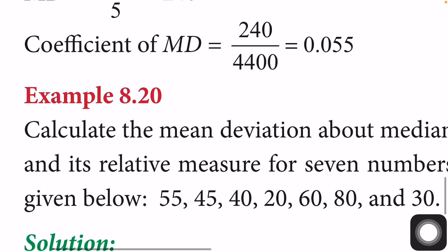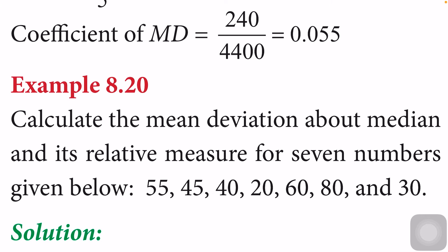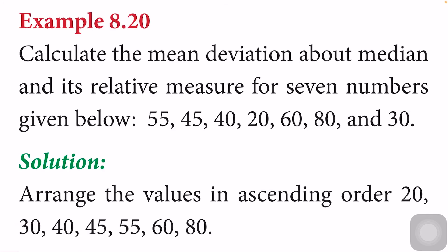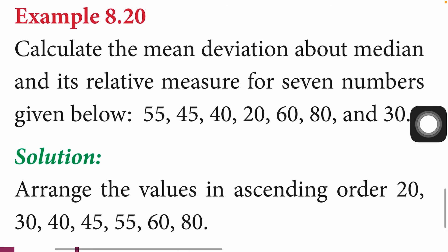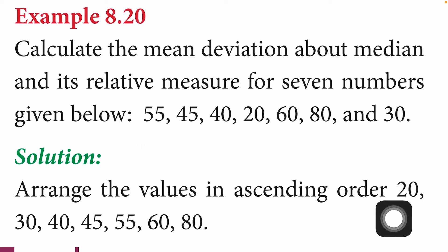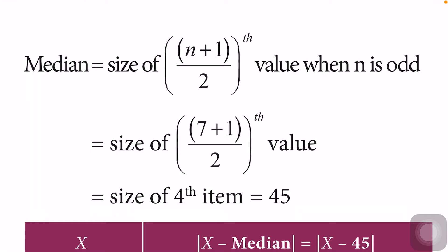Next example: calculate the mean deviation about median and its relative measure for 7 numbers given below. First we calculate the median. To do so, we arrange the values in ascending order. With n equal to 7 (odd), the median is the size of the (n+1)/2 value, i.e., the 4th item in ascending order, which is 45.